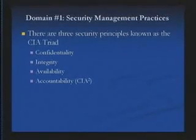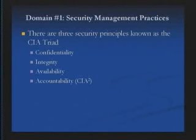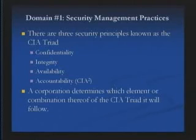We start with security principles. These security principles are known as the CIA triad. CIA stands for confidentiality, integrity, and availability. And just to note — it's called a triad, but they added a fourth part: accountability. Although a triad only has three elements, they came to understand they really needed four. So this triad has four elements, and with the addition of accountability, it is oftentimes referred to as CIA squared, where there are two A's.